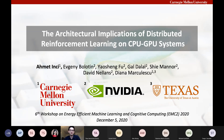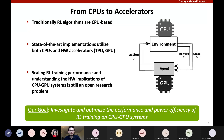Let's start with the system-level mapping of RL algorithms on CPU-GPU systems. Although there are a few examples of end-to-end GPU-based implementations, traditionally RL algorithms are CPU-based. State-of-the-art implementations now utilize both CPUs and hardware accelerators such as TPUs and GPUs. The environment is mostly mapped to CPUs, whereas the agent or learner is mostly mapped to GPUs. Scaling RL training performance and understanding hardware implications of CPU-GPU systems is still an open research problem.